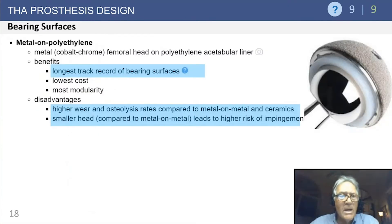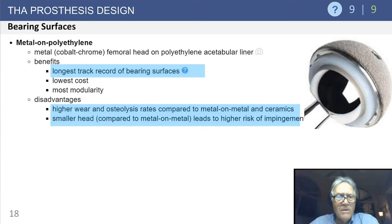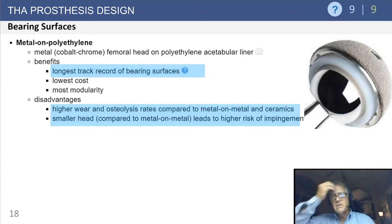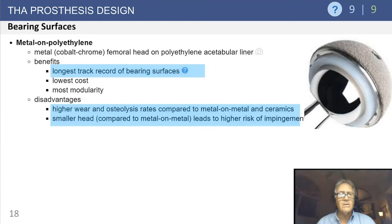Bearing surfaces: primarily metal on polyethylene. Cross-linked polyethylene has an excellent track record, low cost, and has virtually eliminated periprosthetic osteolysis — with osteolysis rates near zero at greater than 10 years. They do wear more than metal-on-metal or ceramic-on-ceramic, but the wear rate is so low and complications so low that these are preferred materials. A theoretical disadvantage is that you can generally use smaller heads compared to metal-on-metal, but that's more theoretical than anything else.